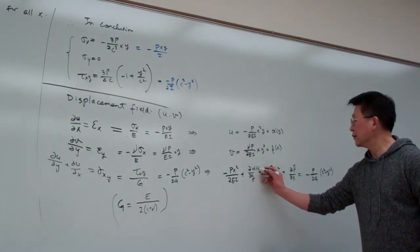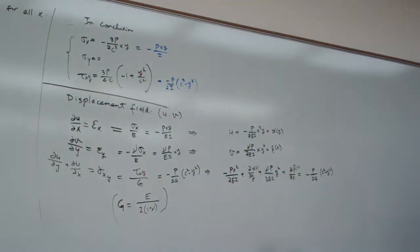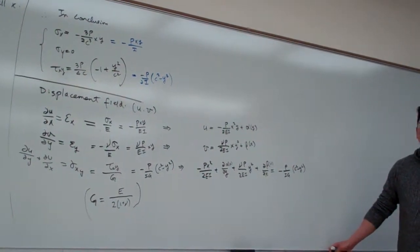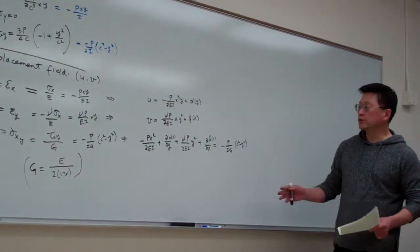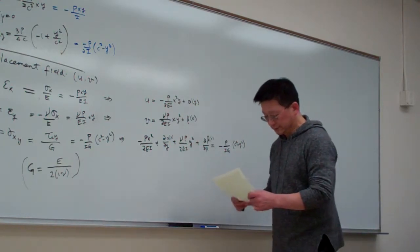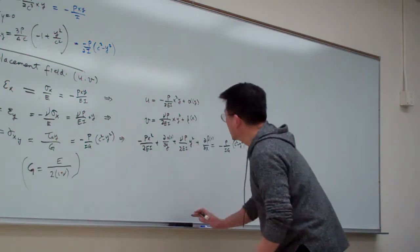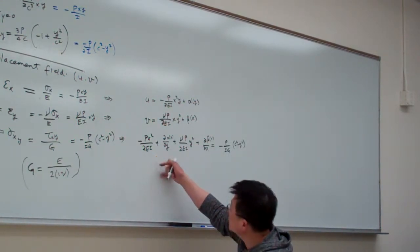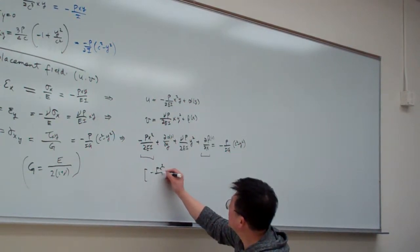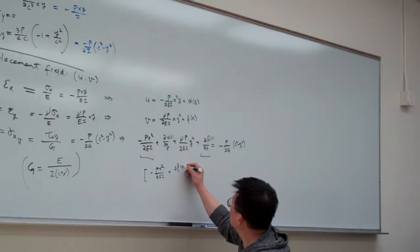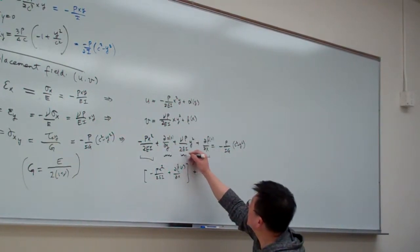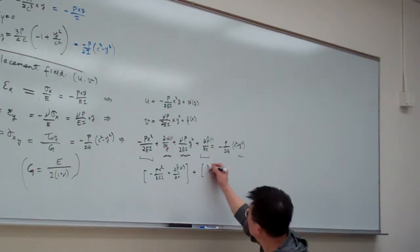So this is a function of Y and this is a function of X. Here I am going to show you a solution technique — we group the terms involving X only, and then we group the terms involving Y only, and we see what happens. Grouping the X terms: that is minus PX squared over 2EI plus partial beta over partial X. Then grouping the Y terms: that will be partial alpha over partial Y.